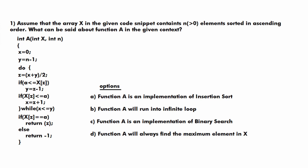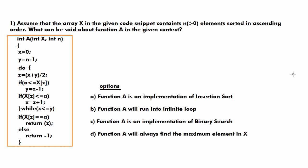This is our first question. Assume that the array x in the given code snippet contains n elements sorted in ascending order. What can be said about the function a in the given context? You have an array x with n elements where n is always greater than 0, elements are in sorted order, and you must pick one option. The function a has two parameters, x and n, where x is the array and n is the size of the array.